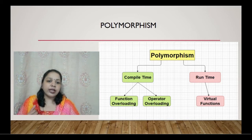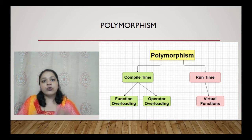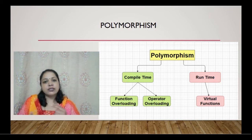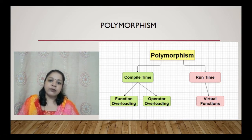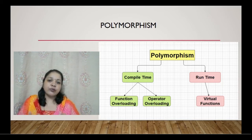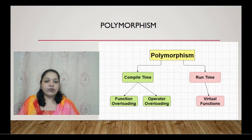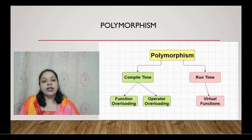Under compile-time polymorphism, we have function overloading and operator overloading. Function overloading means many functions having the same name but different signatures — same name but different signatures, with each function having different functionality.